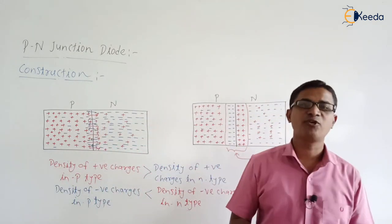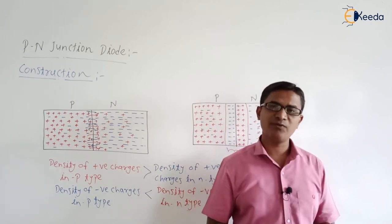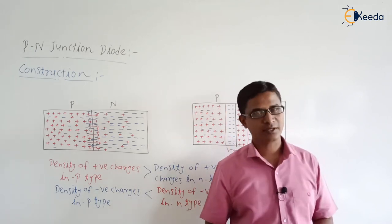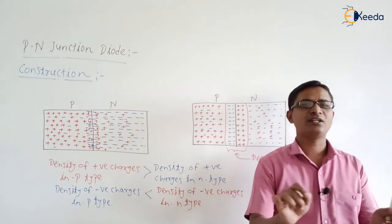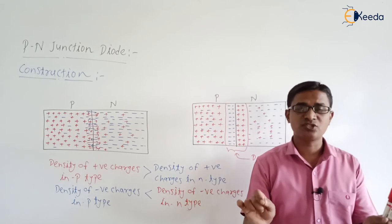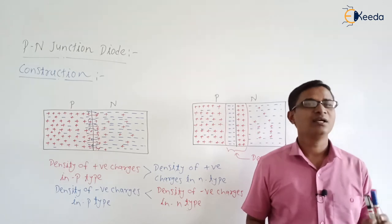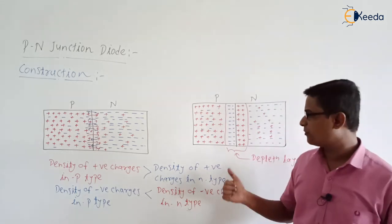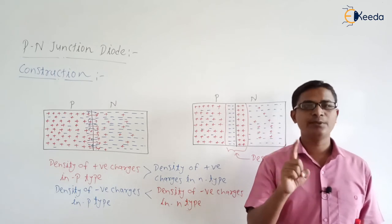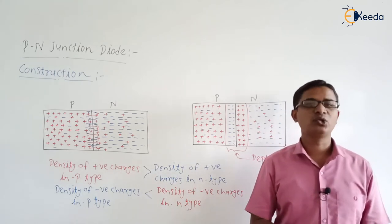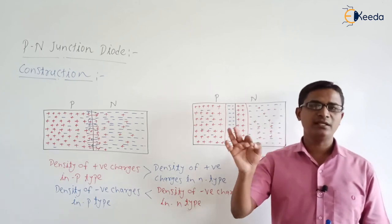If we go to the market and purchase a diode, by default in that diode there will already be the existence of the depletion layer. For the formation of the depletion layer, we do not need to apply any external source across the diode. As soon as we connect the P-type and N-type materials together, there will definitely be the formation of the depletion layer. This depletion layer will play a very important role in understanding the turning on of a P-N junction.